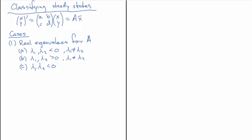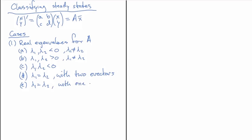Those are the robust cases — they aren't very delicate. Now we have some delicate cases involving an equal sign rather than an inequality. We might have repeated eigenvalues, lambda 1 equal to lambda 2, with two eigenvectors. That's described as algebraic multiplicity 2 — the root is squared in the characteristic polynomial — and geometric multiplicity 2, meaning there are two eigenvectors. But it's possible with a repeated root to have geometric multiplicity 1, only a single eigenvector, in which case you need to find a generalized eigenvector as well.